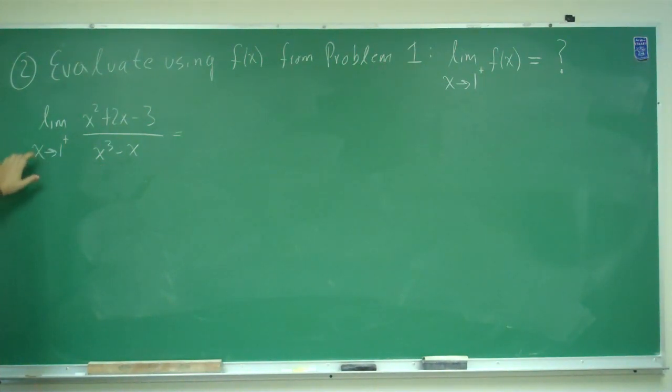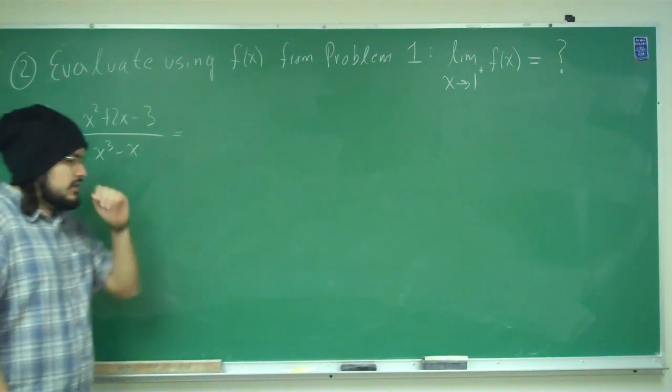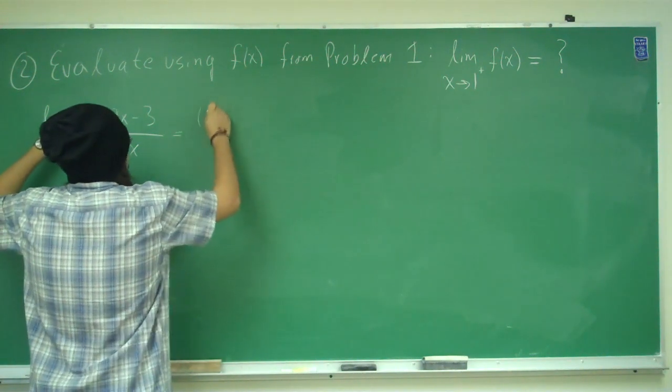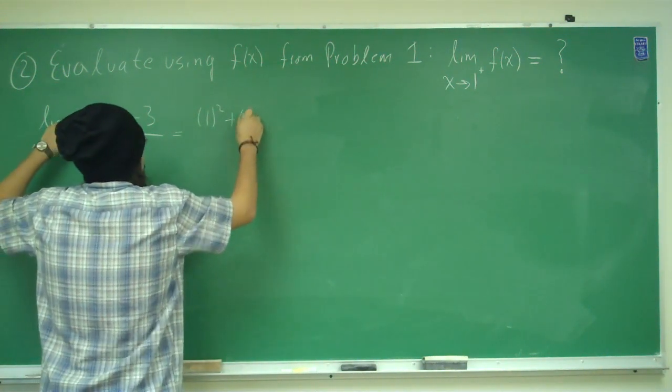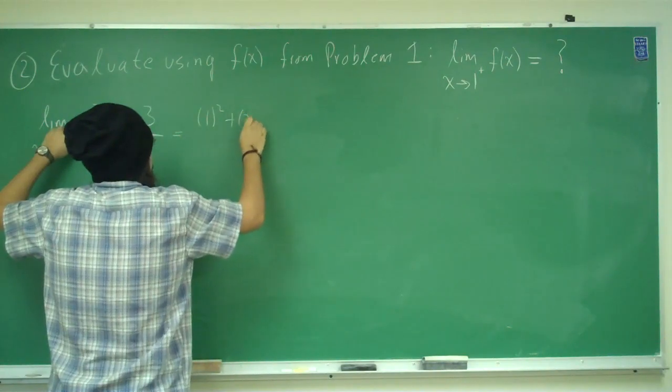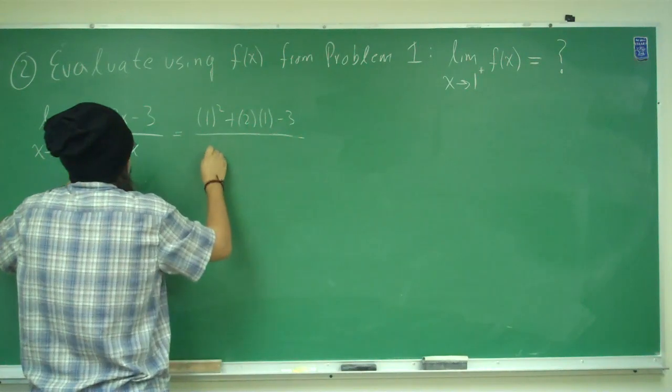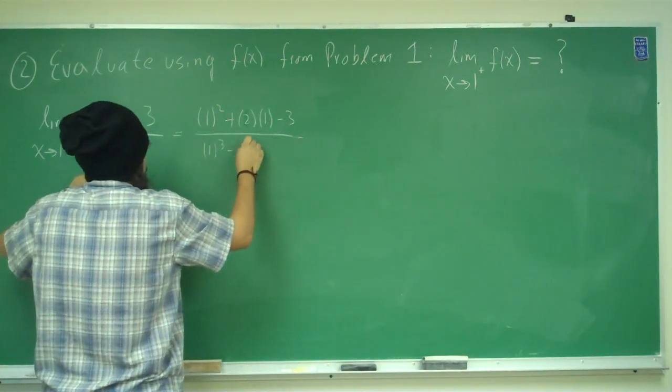So now we want to take the limit as x approaches 1 from the right. OK, so what I usually do is go ahead and plug in 1, see if it works. OK, plug in 1, so we get 1 squared plus 2 times 1 minus 3, divided by 1 cubed minus 4.